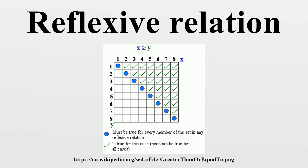The reflexive closure of a binary relation tilde on a set S is the smallest reflexive relation on S that is a superset of tilde. Equivalently, it is the union of tilde and the identity relation on S. For example, the reflexive closure of 'X less than Y' is 'X less than or equal to Y'.